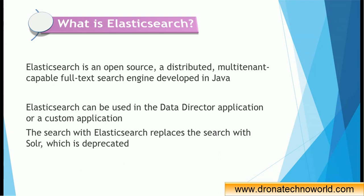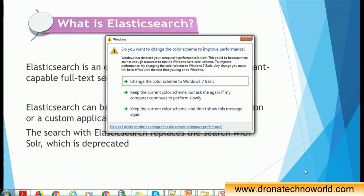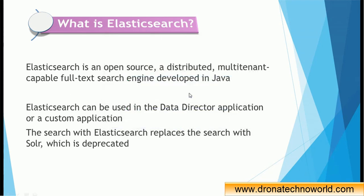Elasticsearch is open source, meaning it is developed by a community and available for any developer or software system to use. It is distributed and multi-tenant capable, meaning you can run it on multiple nodes to achieve better scalability and performance. It is also very good for full-text search, similar to Solr, which is developed by Apache, while Elasticsearch is developed by a different community.